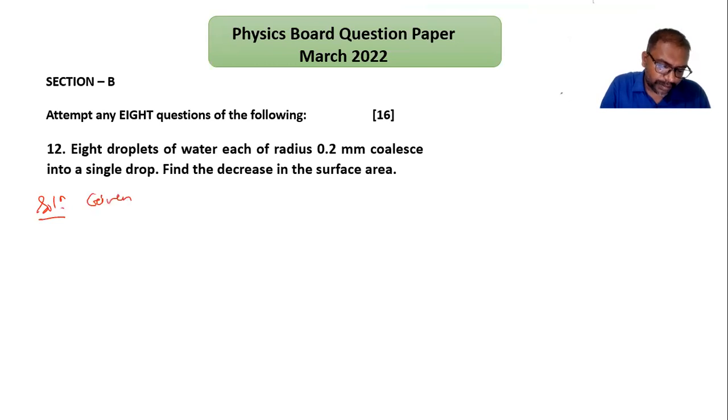What they've given: number of water droplets n equals 8, radius of each droplet small r equals 0.2 mm, and they form a single drop. We have to find out decrease in surface area.